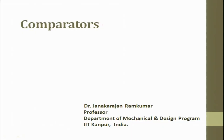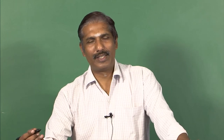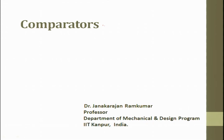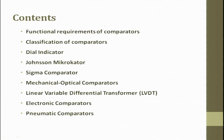The next topic of discussion is comparator. When you see the title comparator, you will quickly realize that there is something to be compared. What is to be compared? An unknown value to a known value — we compare and we try to get some data. The contents will cover functional requirements of comparator, then classifications: dial gauge, mechanical, mechanical optical, pneumatic, then electronic.